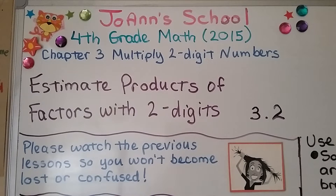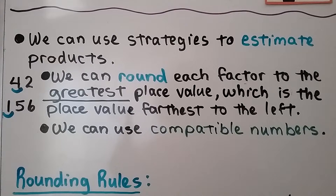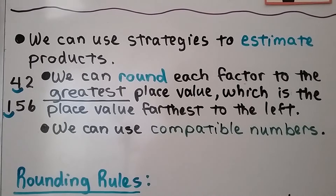Lesson 3.2: Estimate Products of Factors with Two Digits. We can use strategies to estimate products. We can round each factor to the greatest place value, which is the place value farthest to the left. We can also use compatible numbers.